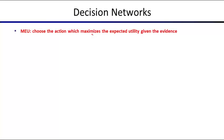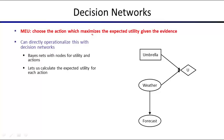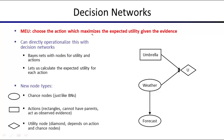So what we try to do is maximize our expected utility — choosing the action that maximizes the expected utility, potentially given some evidence. We're going to operationalize this in decision networks, which are a lot like Bayes nets but with additional variables: action variables and utility nodes. The Bayes net variables are the chance nodes. Actions are in rectangles and utility nodes are in diamonds.